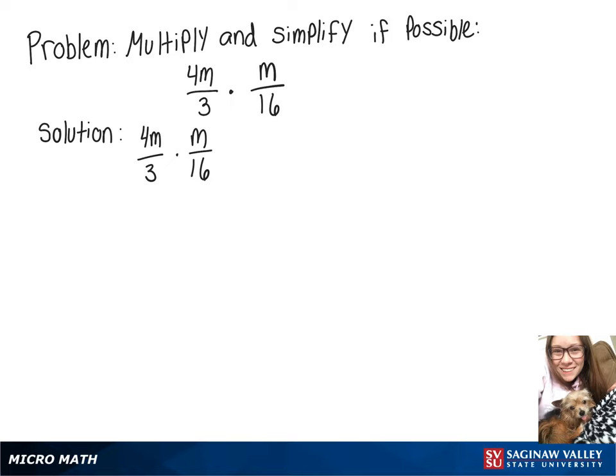In this video, we're going to do 4m over 3 times m over 16. So multiplying across the top will give me 4m squared, and across the bottom, 3 times 16 would give me 48.